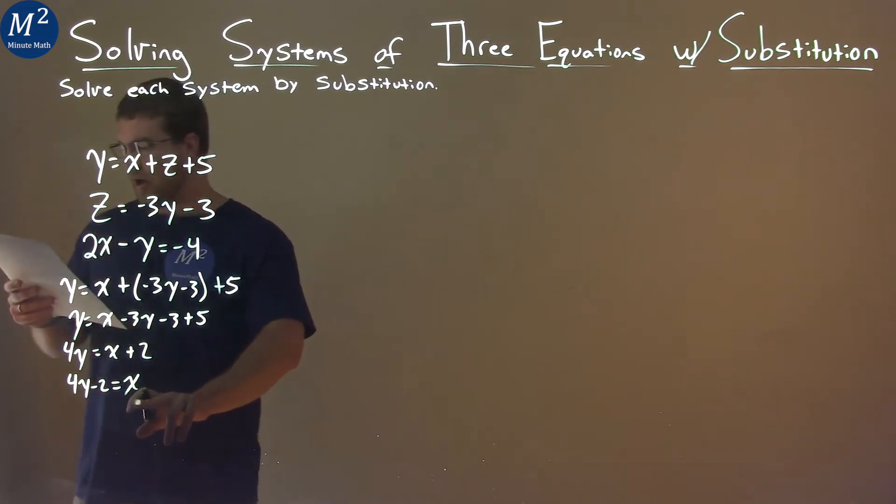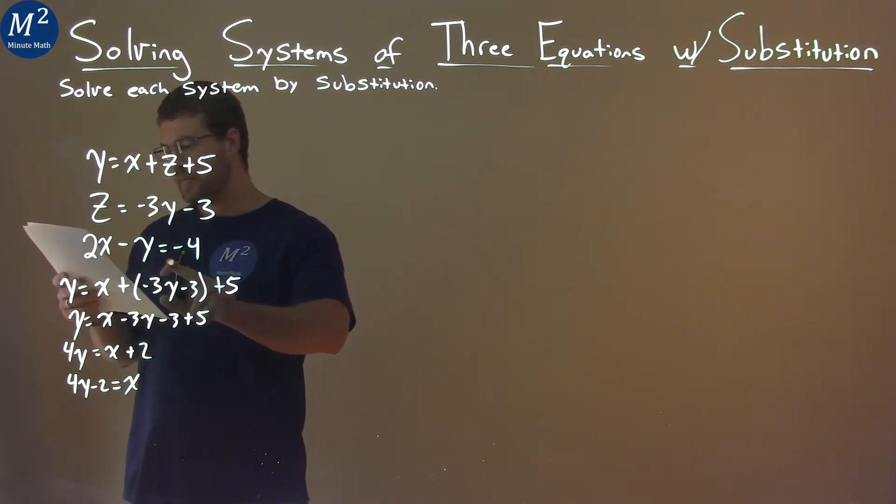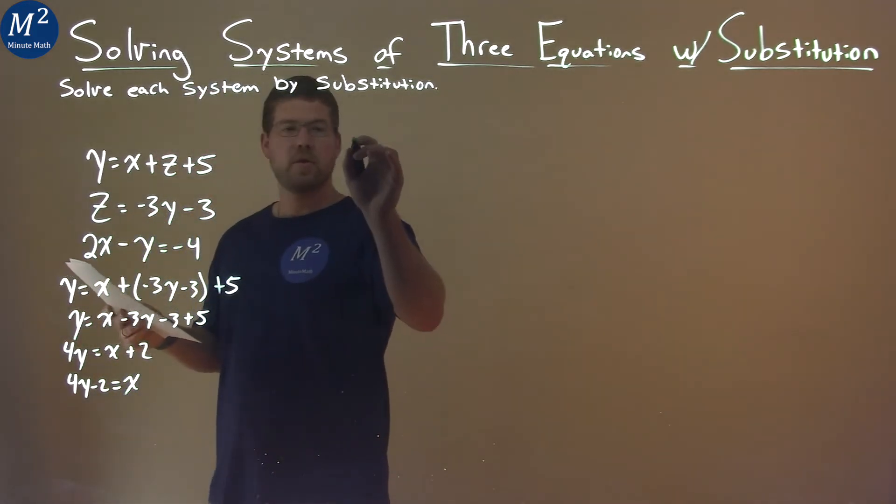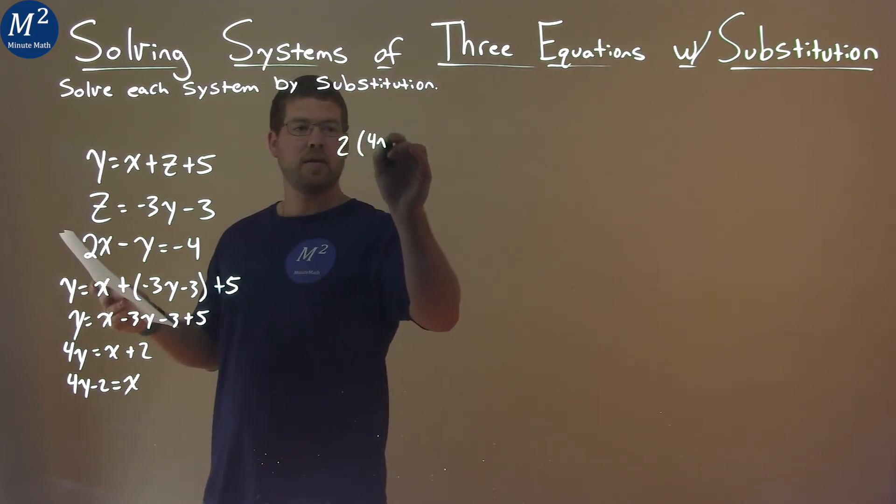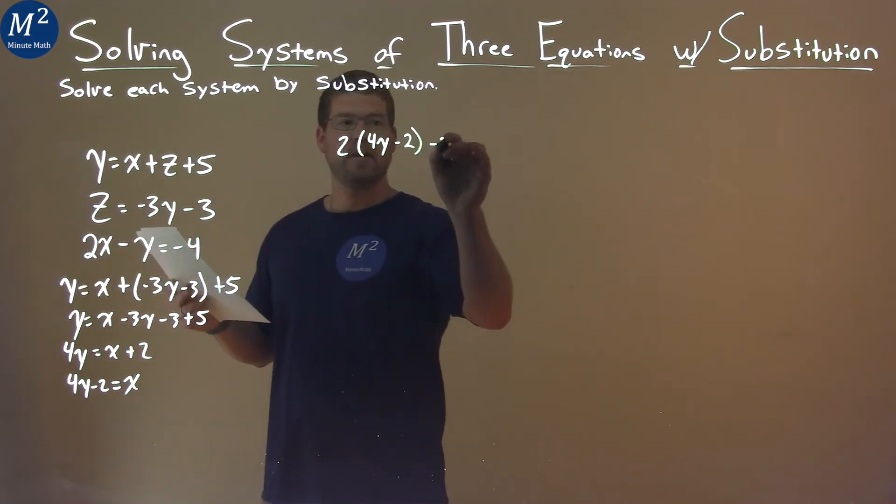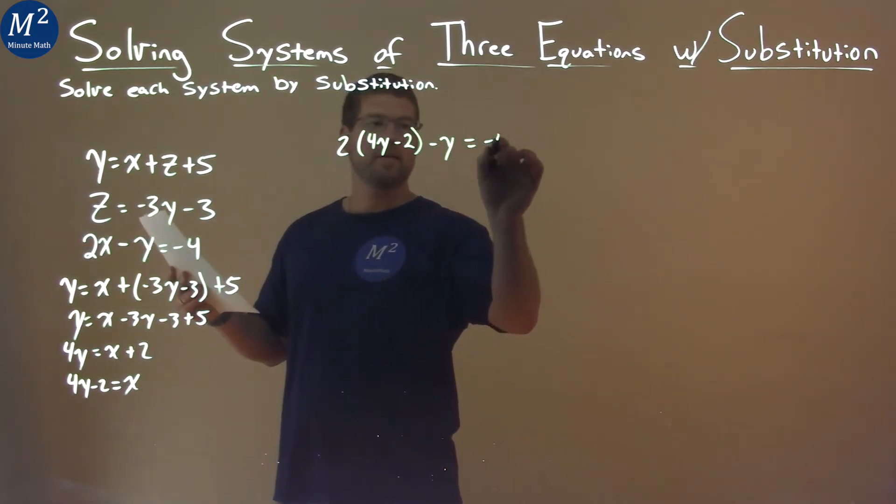And that's going to help me because now I'm going to use this third equation, and I'm going to put this x in here, and now we'll have an equation with only y's. So the third equation: 2, and instead of x, I'm putting 4y minus 2 in. Then we have minus y equals negative 4.